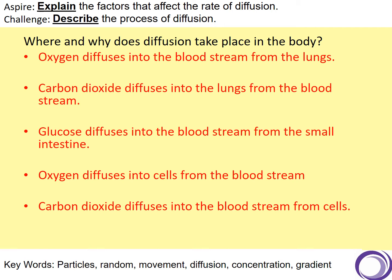Glucose is also another one which diffuses into the bloodstream. There will be lots and lots of glucose from the products of digestion, when we've talked about breaking down starch. There'll be loads of glucose in your small intestine and not very much in your bloodstream, so that will move from the small intestine through the villi and then into the bloodstream. And then oxygen will diffuse into cells from the bloodstream - your cells won't have very much oxygen and they will take the oxygen from the blood into the cells - and carbon dioxide will diffuse out of the cells into the bloodstream. So these are the things that keep you alive. That's why it's so important.